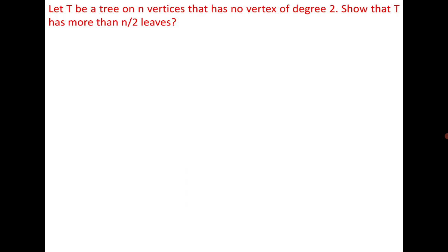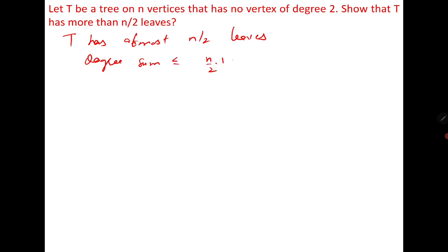The next question: a tree T has no vertex of degree 2. Show that it has more than n/2 leaves. We prove this by contradiction. Assume T has at most n/2 leaves. Since there are no vertices of degree 2, the remaining vertices have degree at least 3. The degree sum is then at least (n/2)·1 + (n/2)·3, which equals 2n. But for a tree the degree sum is 2n−2, giving a contradiction. Therefore T has more than n/2 leaves.